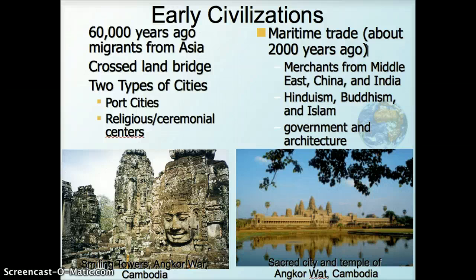Maritime trade was a major influence beginning about 2,000 years ago, with merchants from the Middle East, China, and India traveling through the area for trade. This created a tremendous amount of religious and cultural diversity, where Hinduism, Buddhism, and Islam are all present in terms of religion, government, society, and architecture. Some images here show one of the major religious ceremonial centers at Angkor in Cambodia.